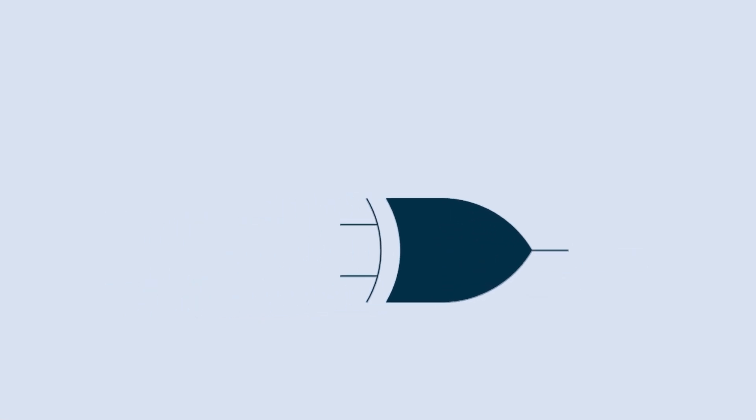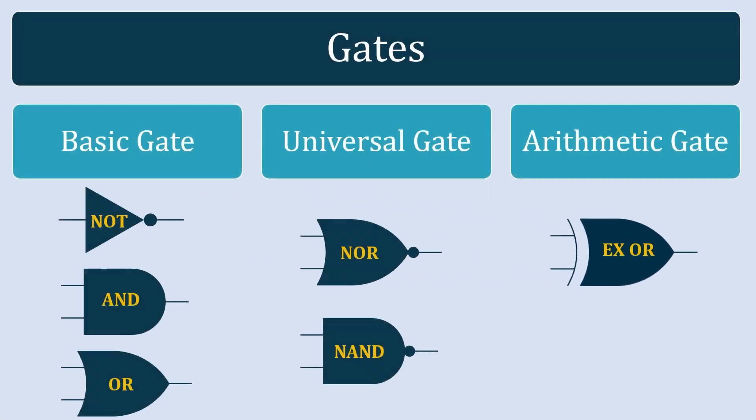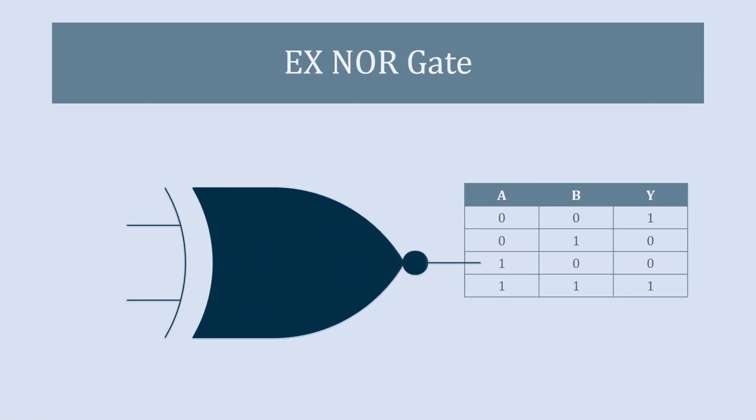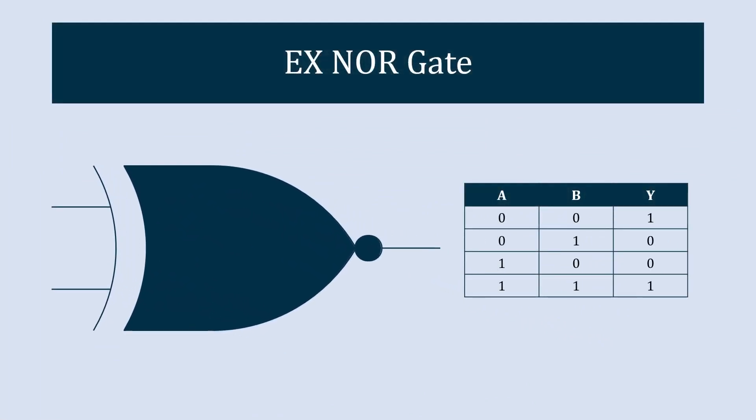The next gate in this category is the XNOR gate. The symbolic representation of the XNOR gate is similar to the XOR gate, just with an additional circle on the right or output side.